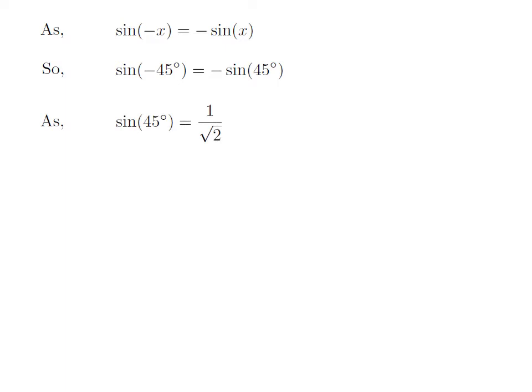We know the value of sine of 45 degree is equal to 1 upon square root of 2. So, we get the value of sine of minus 45 degree is equal to minus 1 upon square root of 2.